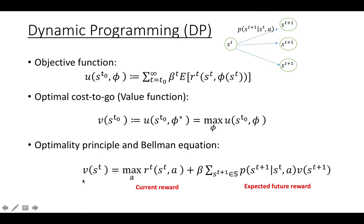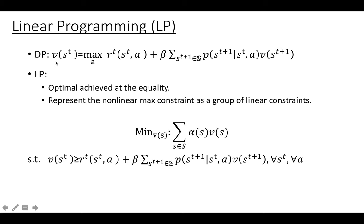The Bellman equation is a fixed-point problem for the function V, which holds for all possible initial states s_t, and can be written in vector form. To solve dynamic programming, one can use value iteration, policy iteration, or linear programming. We write the Bellman equation as an objective function with constraints: the left-hand side should be greater than or equal to the right-hand side for all actions, and we minimize. At the optimal point, equality is achieved. Since there is a max over A, the constraint must hold for all possible actions A — representing the nonlinear max operator as a group of linear constraints.